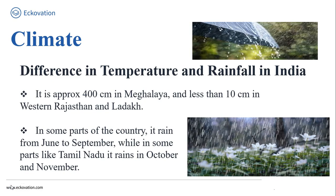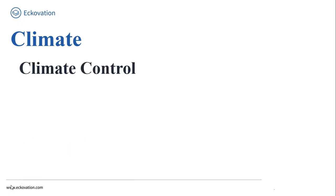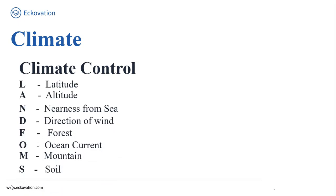Now let's continue our discussion with climate control. When we talk about climate control, there are six major controls of the climate of any place: latitude, altitude, nearness from the sea, direction of wind, and ocean current — among others. To remember these, we can use the word 'LANDFORMS' as a mnemonic, which will make it easy for you to remember the major controls. We will now see each control one by one in a little detail.